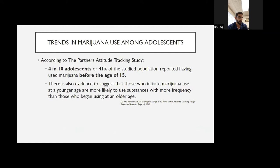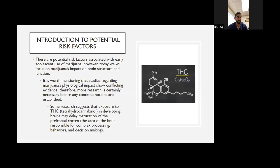According to the partner attitude tracking study, another study that was done in adolescence, four in 10, which is 41 percent of the studied population reported having used marijuana before the age of 15. There is also evidence to suggest that those who initiate marijuana use at a younger age are more likely to use substance more frequently than those who begin using at an older age. There are potential risks associated with the early adolescent use of marijuana. However, today we will focus on the marijuana impact on the brain structure and the function. It's worth mentioning that the studies regarding marijuana physiological impact show conflicting evidence. Therefore, more research is needed and we'll talk more about that in the end.